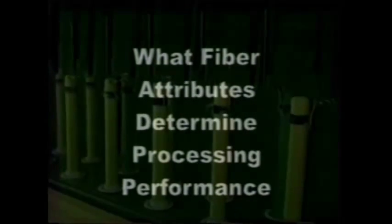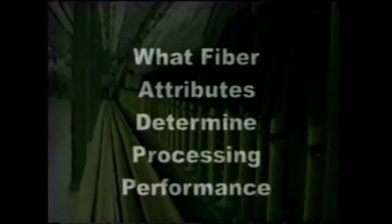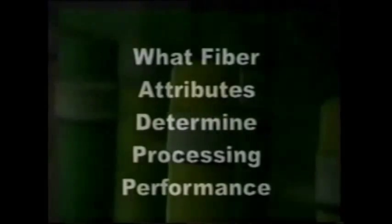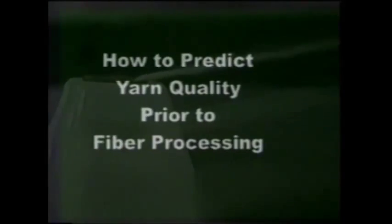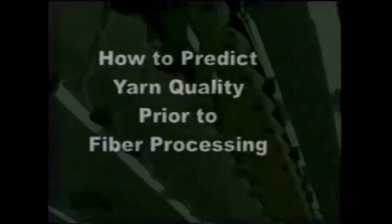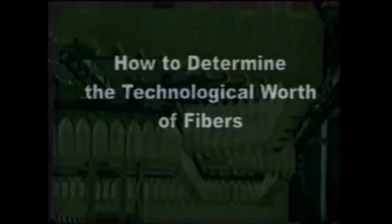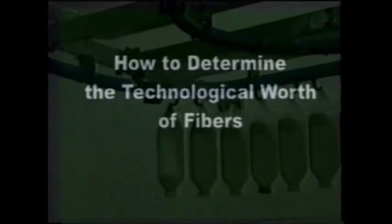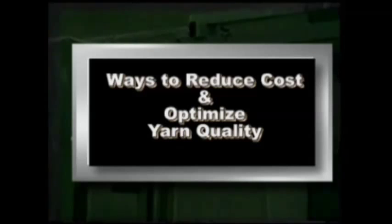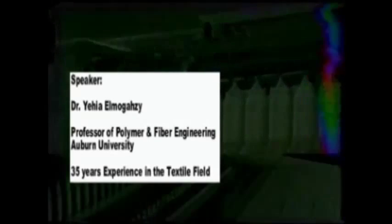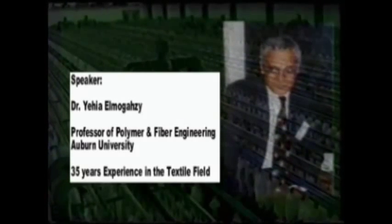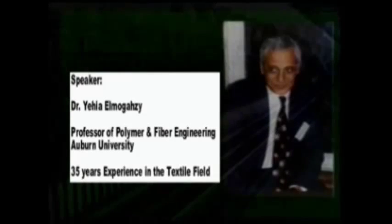The fourth part deals with fiber processing starting with harvesting and ginning and going into cotton mixing and blending. All stages of spinning preparation including opening and cleaning, carding, drawing, combing, and roving are covered in great detail. Different types of spinning such as ring spinning, compact spinning, rotor open-end spinning, and friction spinning are also covered. The course will also cover effects of yarn and fiber characteristics on textile fabrics.